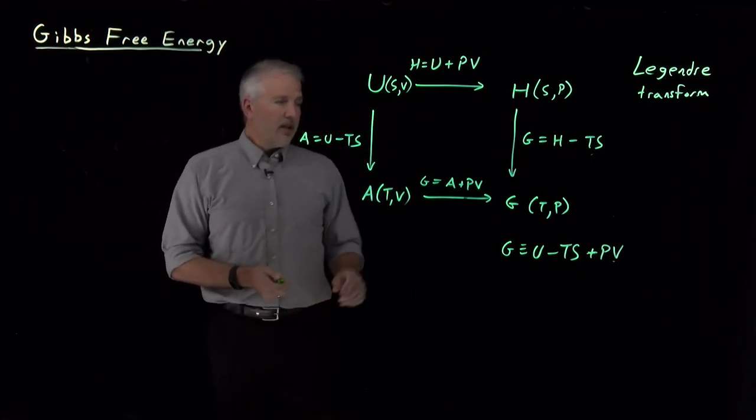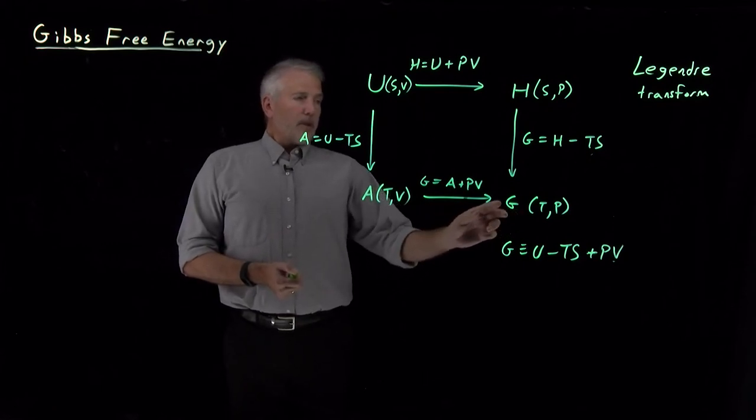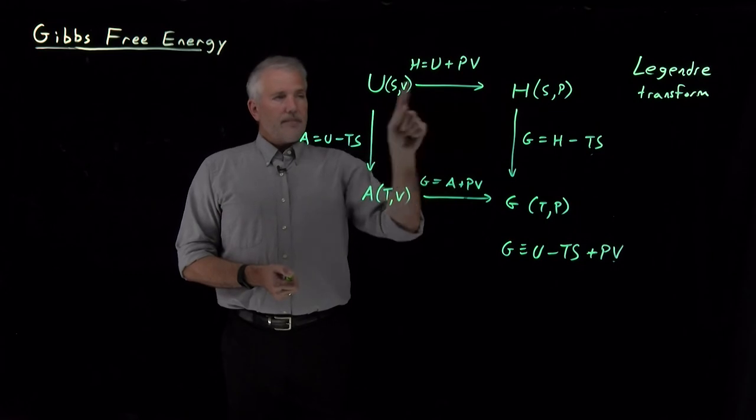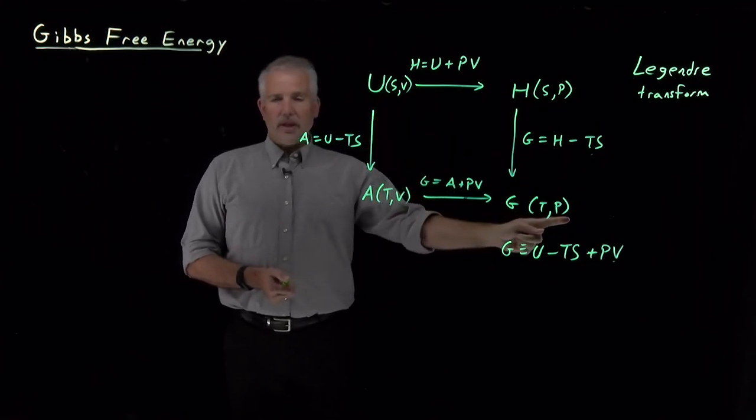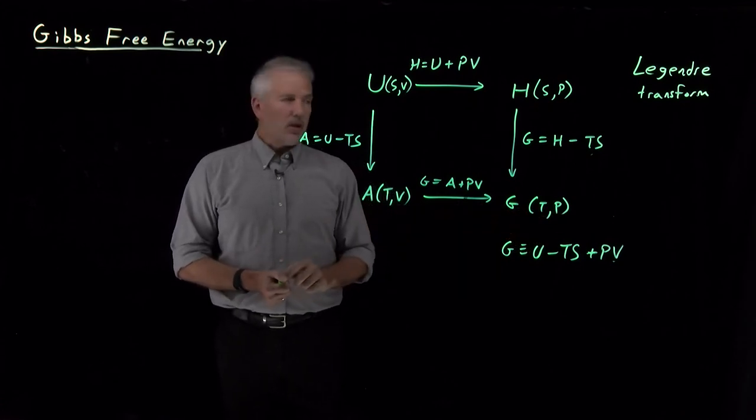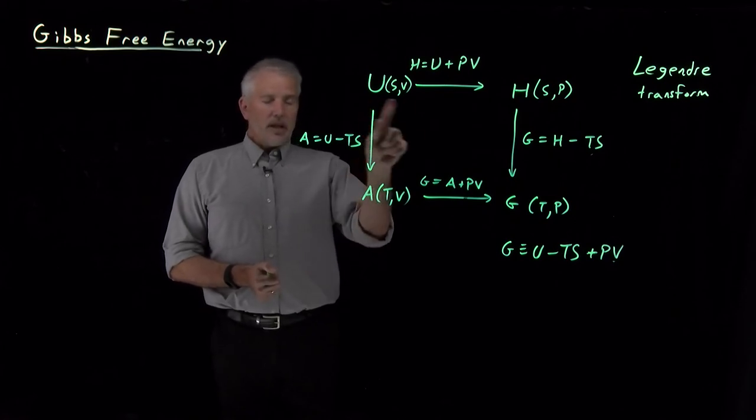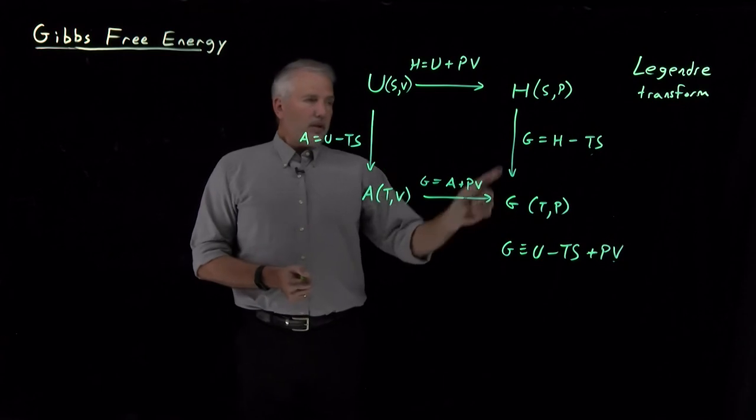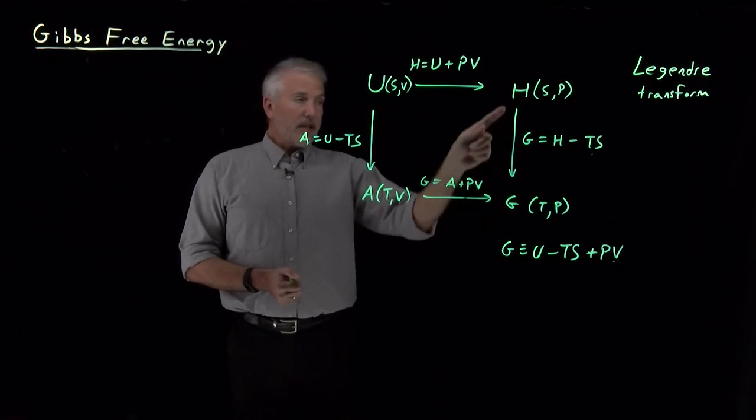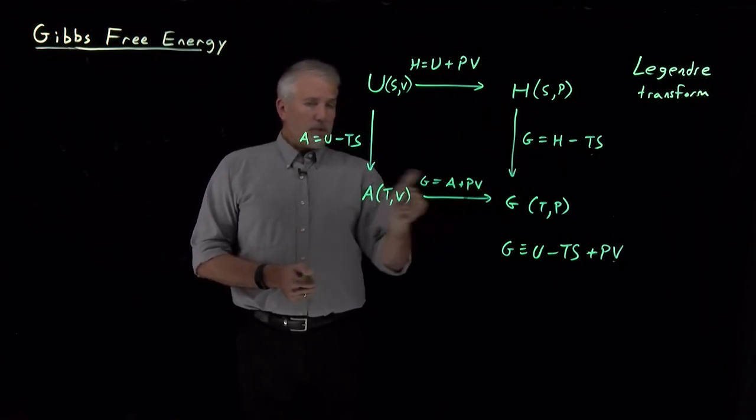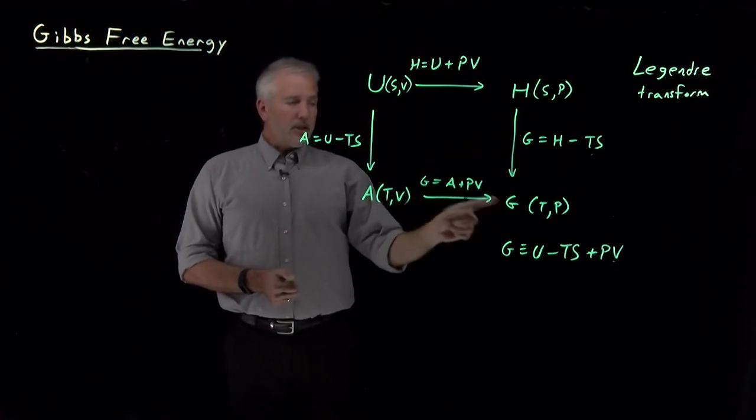So essentially what we've done is said, let's find some free energy that is just like the enthalpy is more convenient at constant pressure than the internal energy. The Gibbs free energy is more convenient at constant pressure than the Helmholtz free energy. Or likewise, the Helmholtz free energy tells us about spontaneity, unlike the internal free energy. To turn the enthalpy into a free energy and let us use it to tell something about spontaneity, we make this transformation just as we did for turning the energy into the Helmholtz free energy. We've done the same thing for the enthalpy turning into the Gibbs free energy.